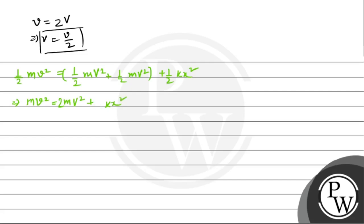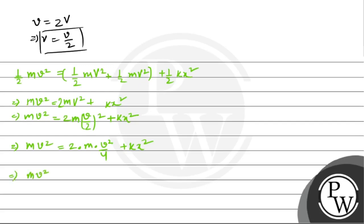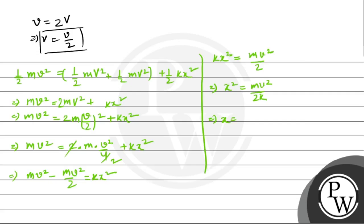Substituting V = v/2: m·v² = 2m·(v/2)² + k·x², which gives m·v² = 2m·(v²/4) + k·x² = m·v²/2 + k·x². Therefore k·x² = m·v² − m·v²/2 = m·v²/2. So x² = m·v²/2k, giving x = v·√(m/2k).